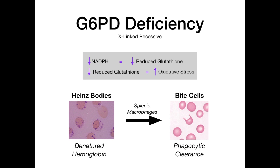Big picture: anybody who lacks glucose-6-phosphate dehydrogenase has G6PD deficiency by definition. This is an X-linked recessive disease where you lack the key enzyme in the HMP shunt that generates NADPH. Without NADPH you can't make reduced glutathione, and without reduced glutathione you can't handle oxidative damage from free radicals. You become very susceptible to hemolysis when red blood cells undergo oxidative damage—especially from the SPIN-F agents, which are oxidizing in nature.